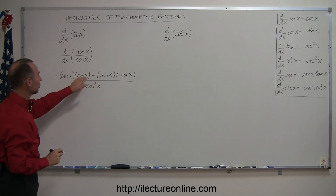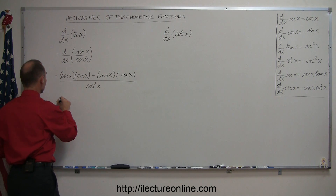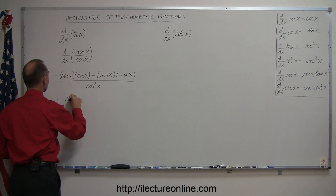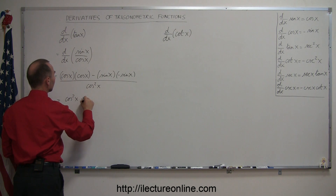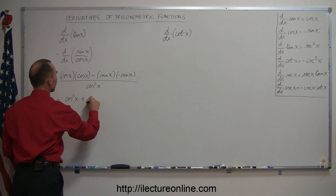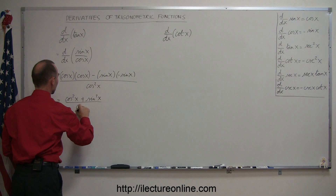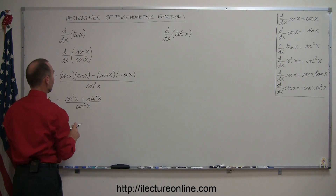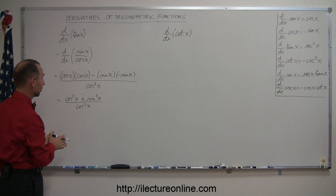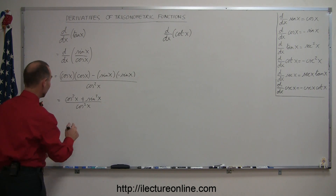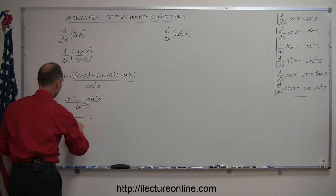In the numerator, cosine times cosine is cosine squared. So we have cosine squared of x, and then minus times minus becomes plus, so sine times sine becomes plus sine squared of x, all divided by cosine squared of x. We should remember that cosine squared of x plus sine squared of x equals 1, so this becomes 1 over cosine squared of x.